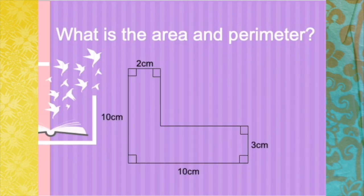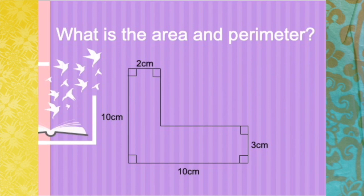Now in this video, we will be covering rectilinear shapes only. A rectilinear shape is one whose edges all meet at right angles. So we actually have two possible ways to find the area of a rectilinear shape. One is the additive method and the other is the subtractive method. In this video, I will show you the subtractive method.